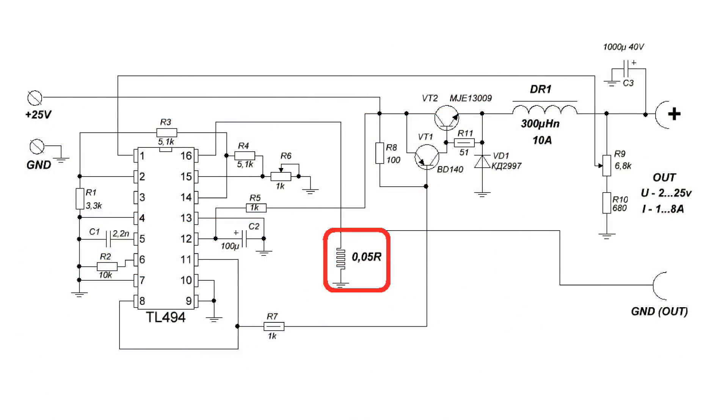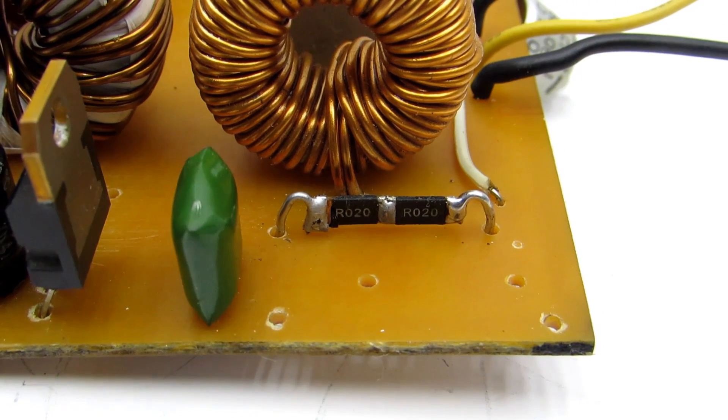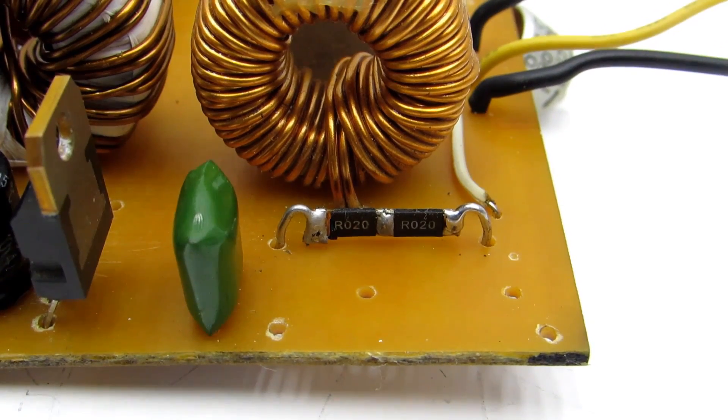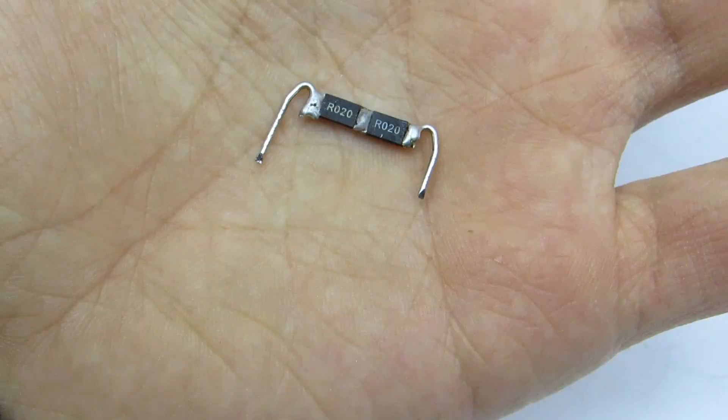A current shunt or a current sensor. Here, I would like to draw your attention to the fact that output and input grounds are separated by shunt. Pay attention to it when assembling.